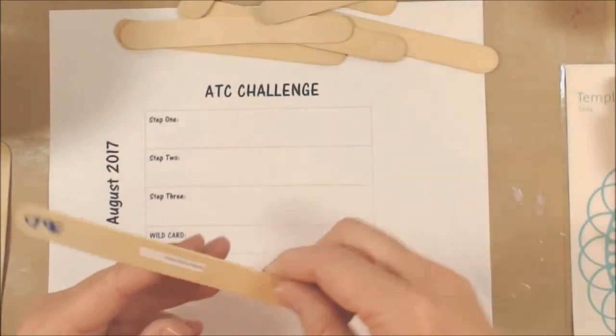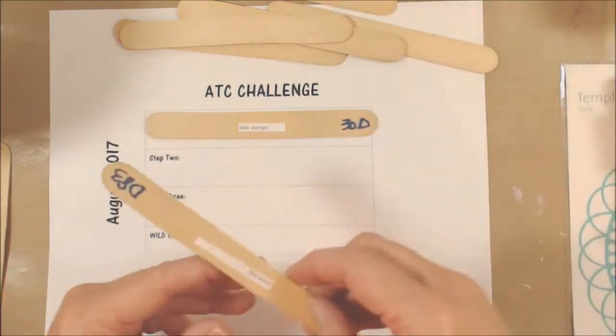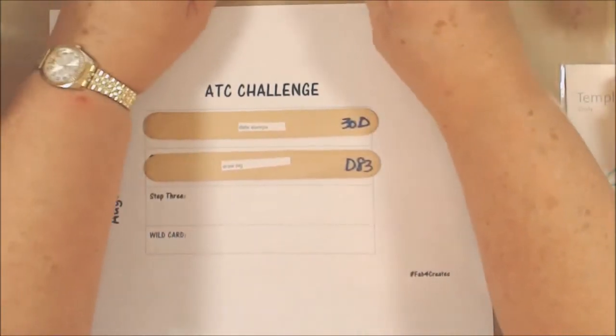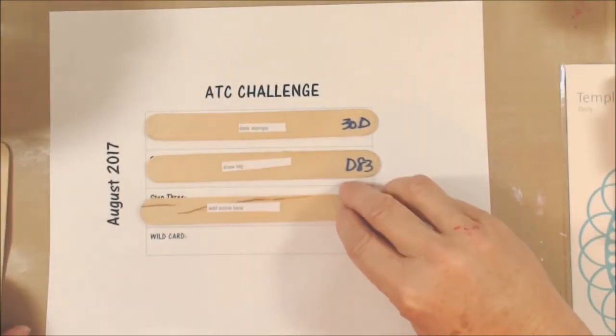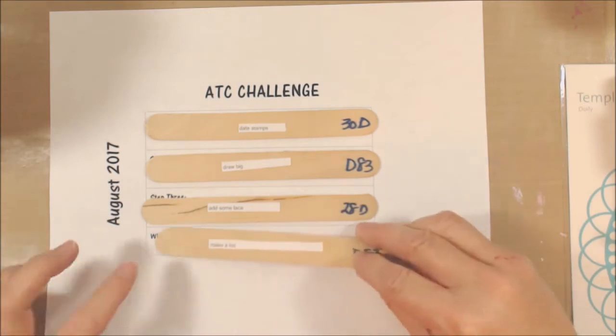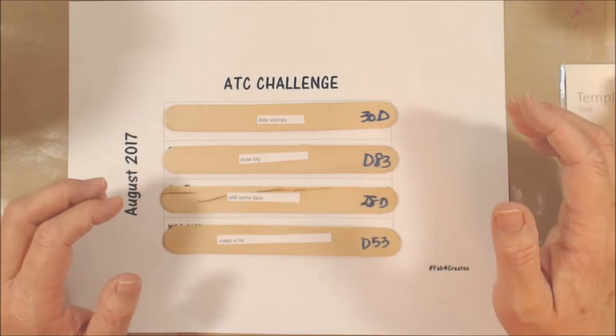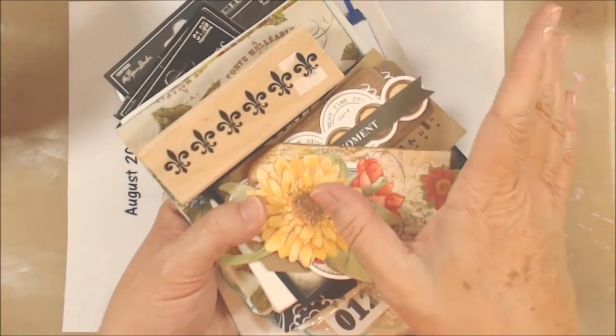Now from there, we're going to pick three. Okay, there's one—date stamp. There's two—draw big. That's persistent lately. And number three, add some lace. Okay, and then our wild card is of course make a list. So there's your ATC challenge and your Pick a Stick challenge and your bundle of goodies that you can win.